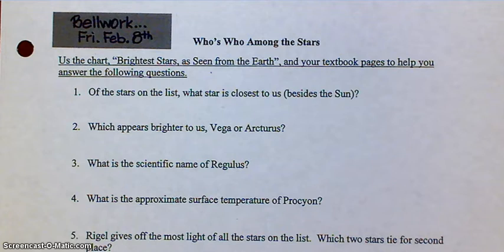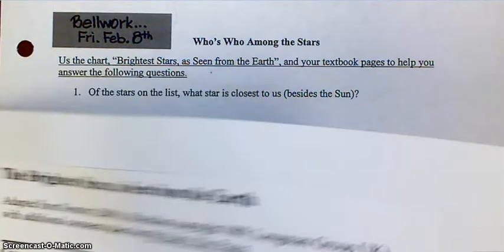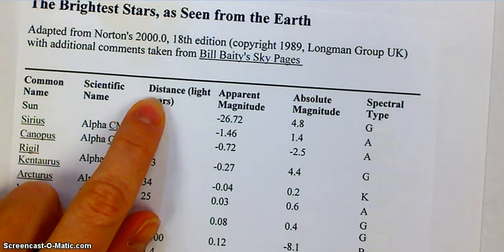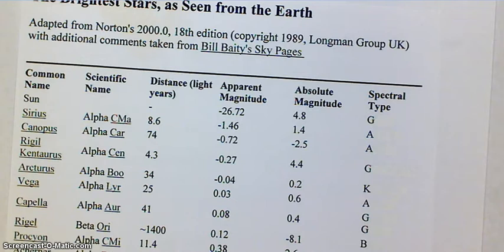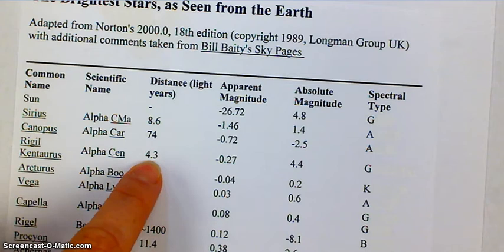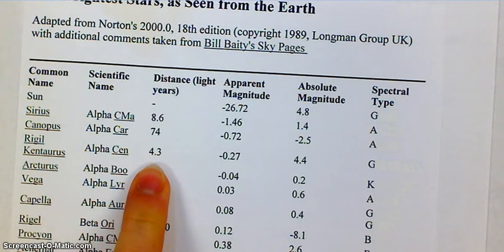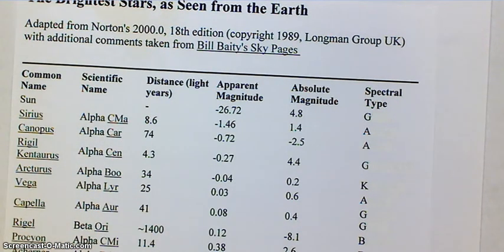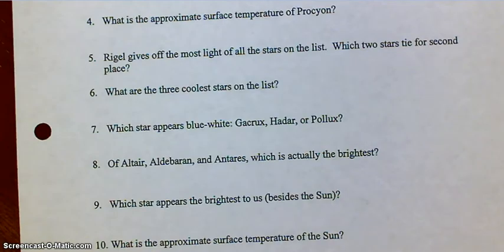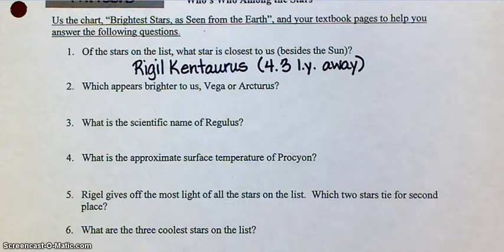Number one says: of the stars on the list, which star is closest to us? You're going to look at the distance in light years. If you cruise through and look very carefully, the smallest distance in light years that you can find is right here — 4.3. Rigel Kentaris is all one name, that's one star. So Rigel Kentaris is actually 4.3 light years from us, and it is the closest star to us on this list — and I think it's the closest star to us besides our sun, period. So it's Rigel Kentaris for number one, it's 4.3 light years away.